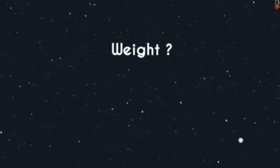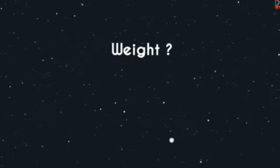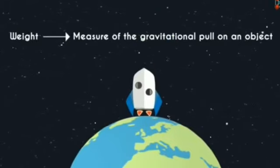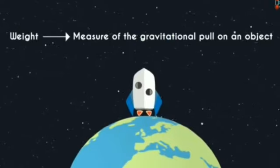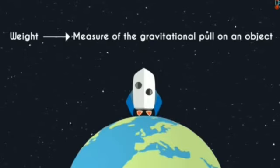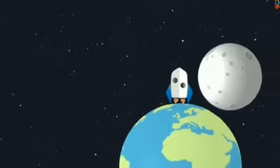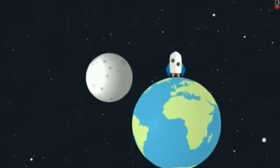Now let us see what is weight? How is it different from mass? Weight is the measure of the gravitational pull on an object. Let us understand by taking an example. Let the two places be taken as A and B.